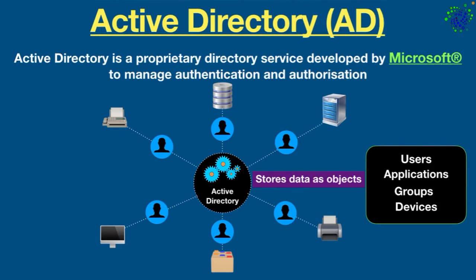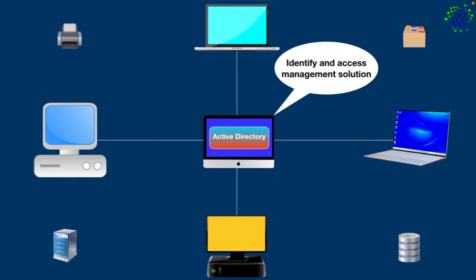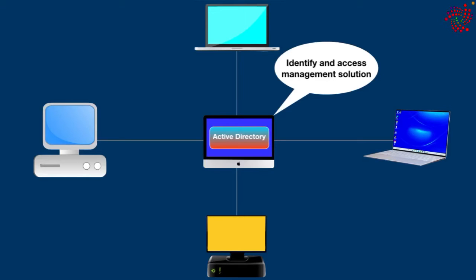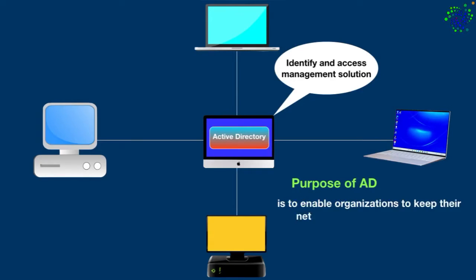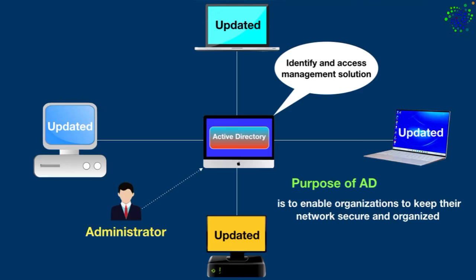Technically, Active Directory serves as a centralized identity and access management solution that houses all network resources such as printers, servers, shared files, and so on. The purpose of Active Directory is to enable organizations to keep their network secure and organized without using excessive IT resources. For example, with Active Directory a network administrator doesn't have to manually update every change on every computer on the network — he simply does it once in Active Directory and every computer on the network gets updated.